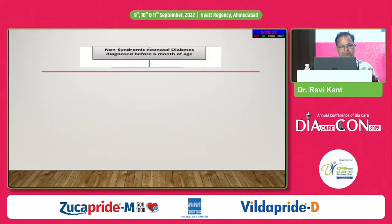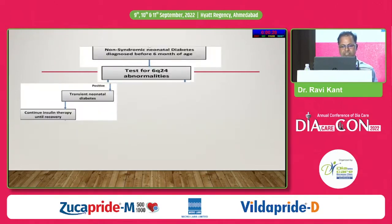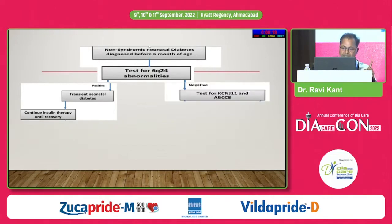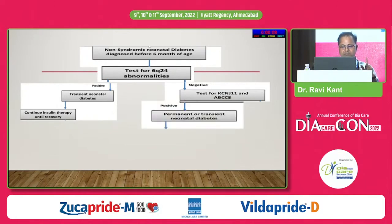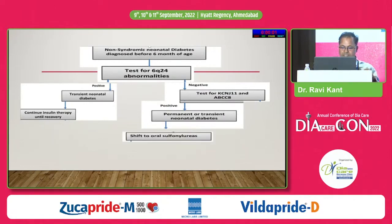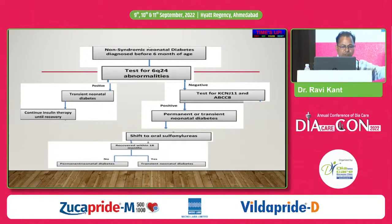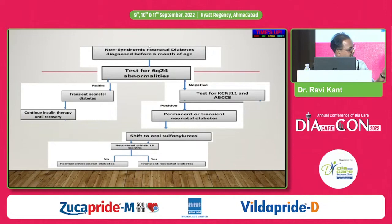This is the typical algorithm: for non-syndromic neonatal diabetes diagnosed before six months of age, test for 6q24 abnormality. If positive, this is transient neonatal diabetes — continue insulin therapy until recovery. If negative, test for KCNJ11 and ABCC8 mutations — the sulfonylurea receptor and ABCC8 genetic mutation. If positive, this is permanent neonatal diabetes — shift the patient to sulfonylurea OHA. If the patient does not require further treatment after 18 months on sulfonylurea, this confirms permanent diabetes. If the patient responds and remits, this is transient neonatal diabetes.